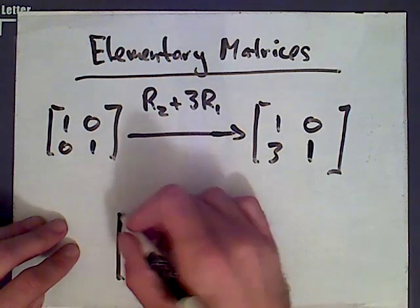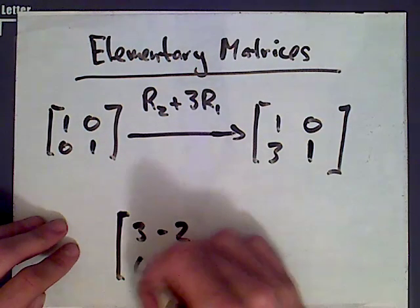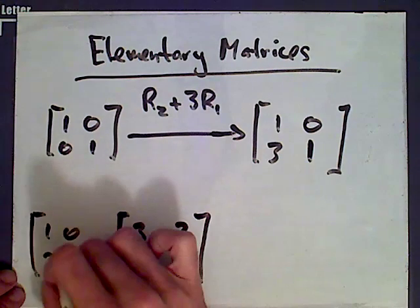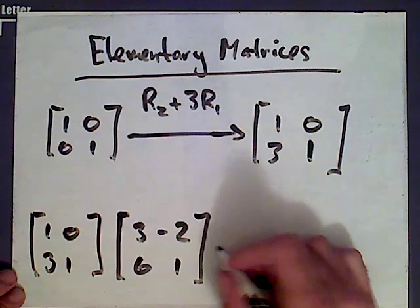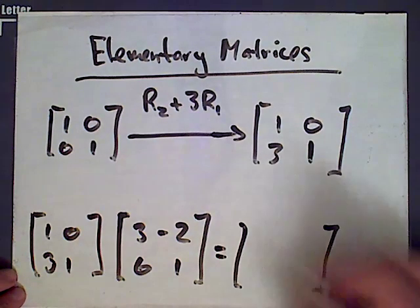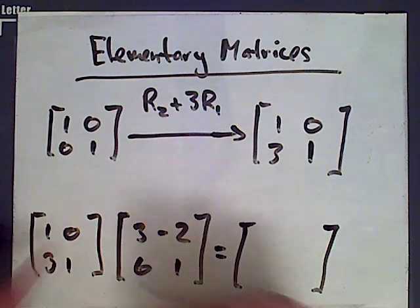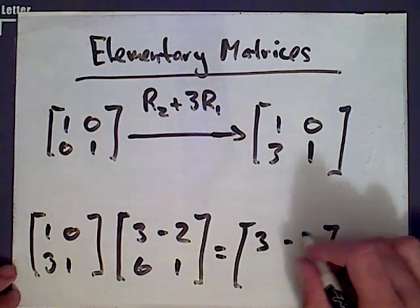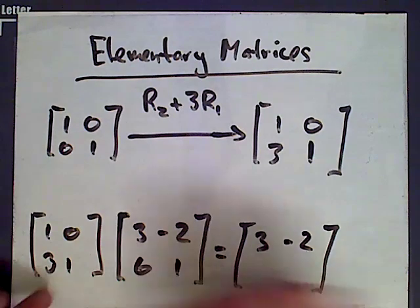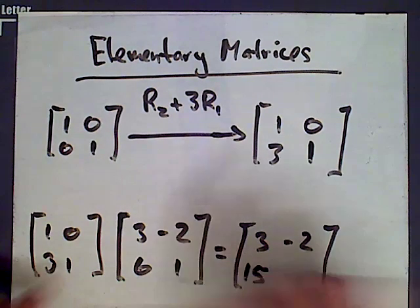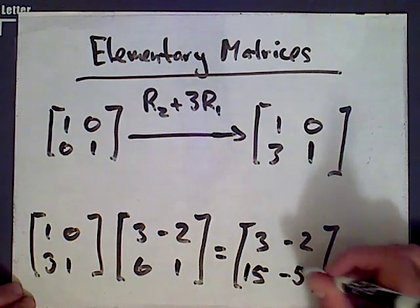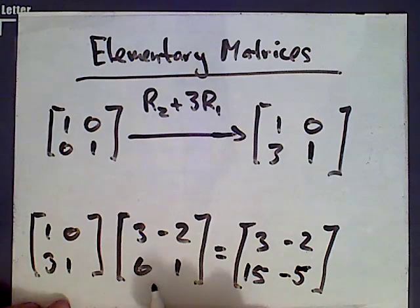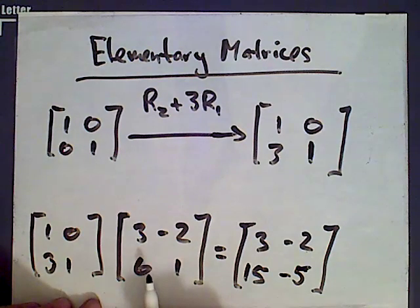Okay, let's apply this to our example matrix. Alright, so performing the matrix multiplication. 3 plus 0 is 3. Negative 2 plus 0 is negative 2. 9 plus 6 is 15. Negative 6 plus 1 is negative 5. And checking, what you can see is that this matrix on the right here is obtained from our original matrix by taking row 2 and adding 3 times row 1 to it.